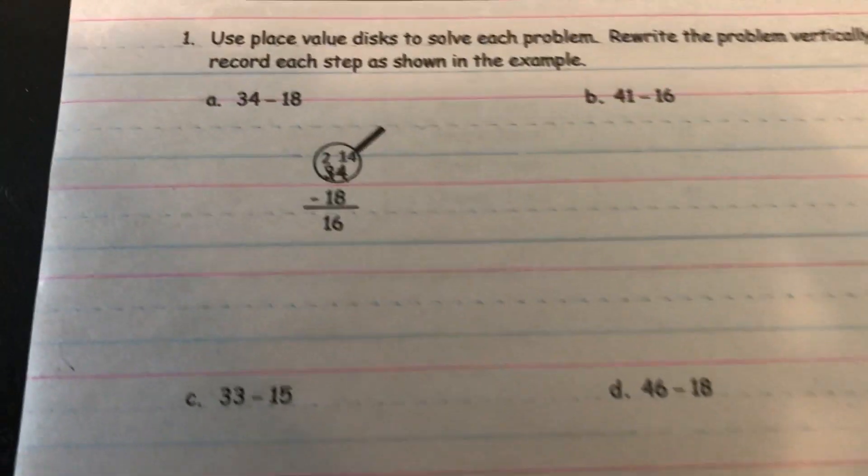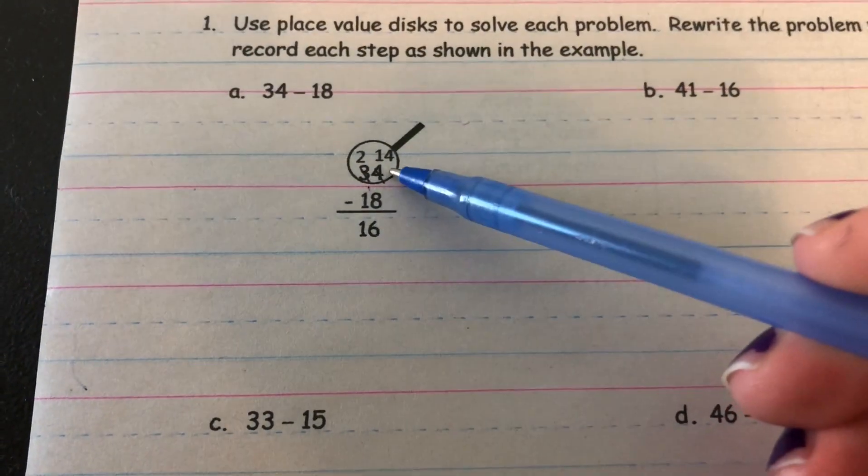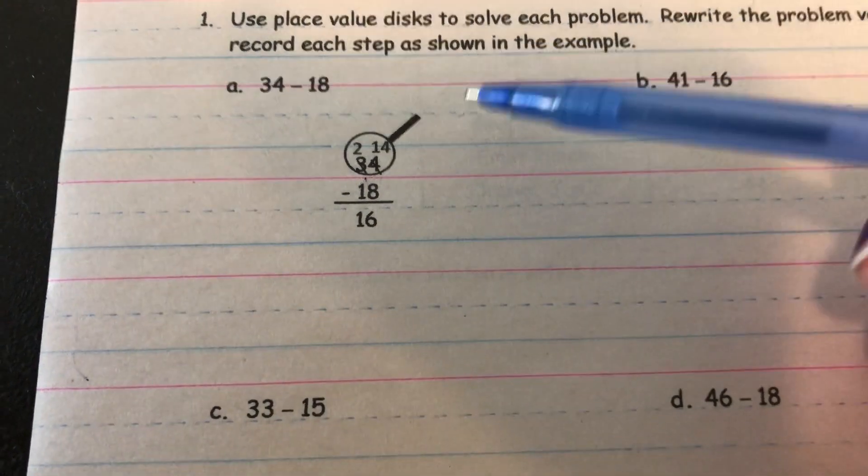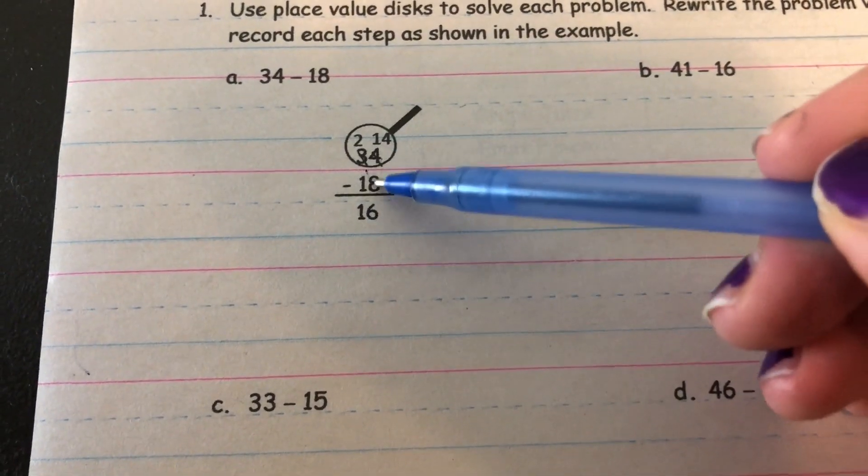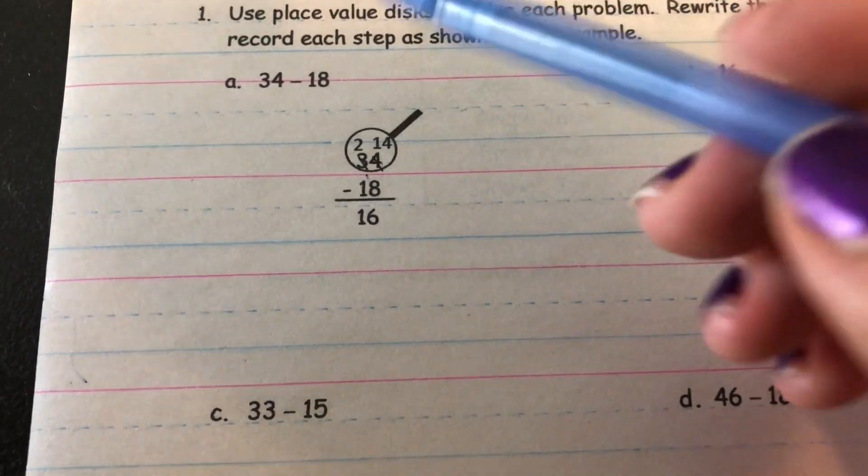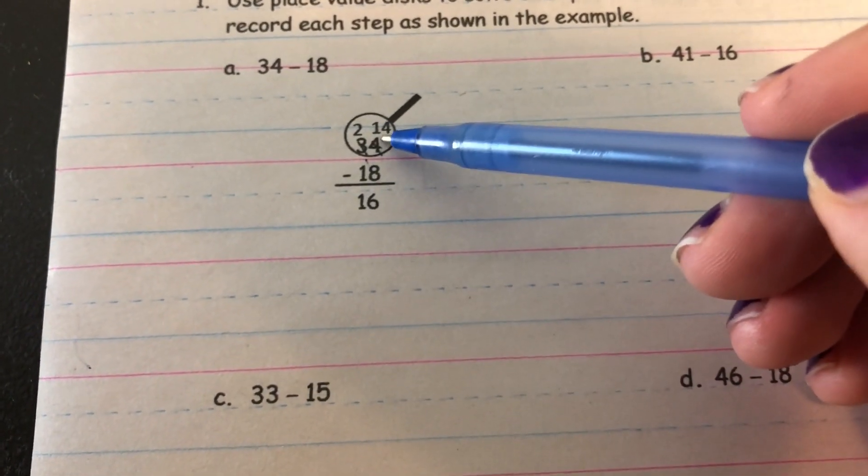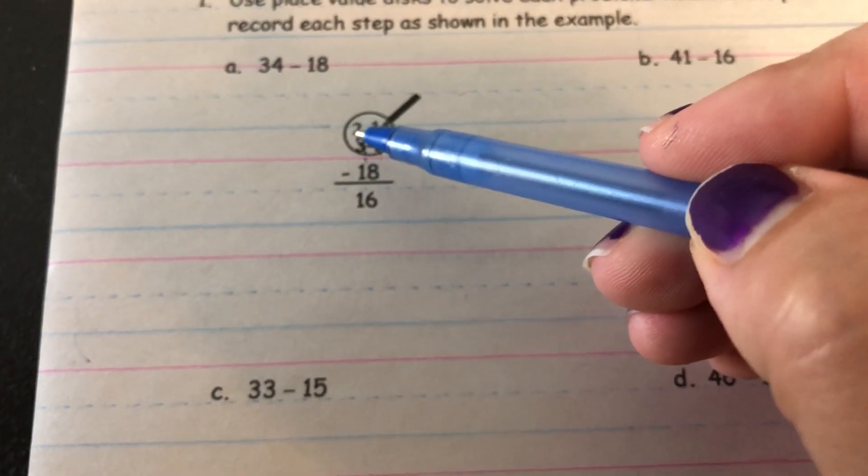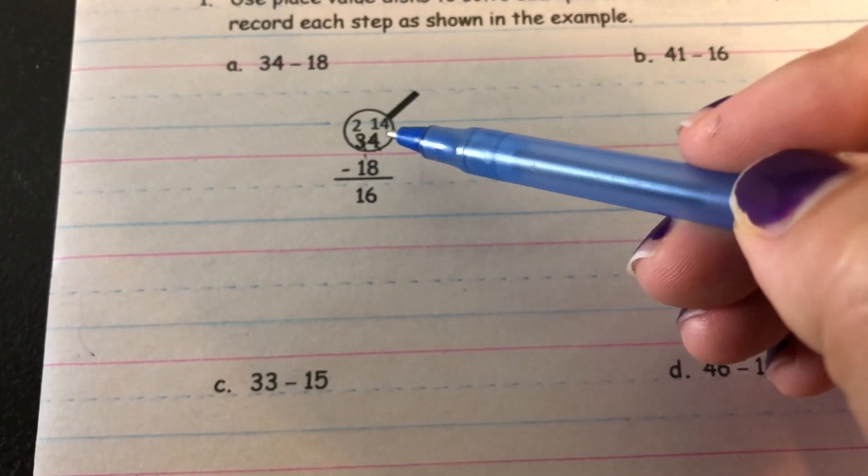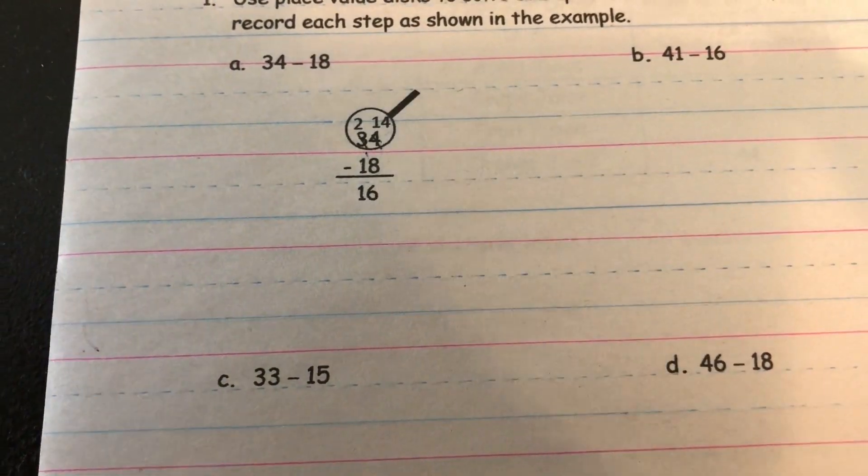So they looked really close at 34 and they realized that they had four ones and they could not take eight away. So they needed to unbundle a 10 to get more ones. So now they have two 10s and 14 ones and they were able to do their subtraction.